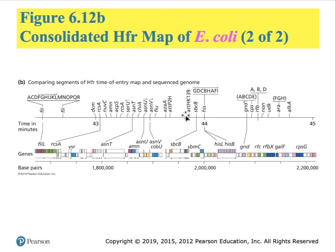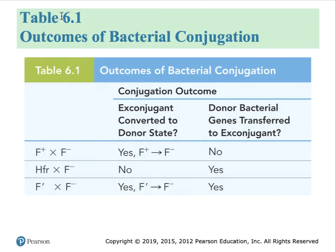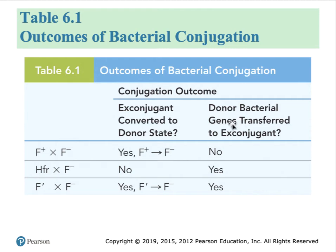Here we have the consolidated map showing where each HFR strain initiates transfer and the direction in which it does so. The result is a consolidated HFR map of E. coli, showing the position of all the genes over a 100-minute time period. If we zoom in on one area, we can see how much detail has been gathered from these consolidation maps.